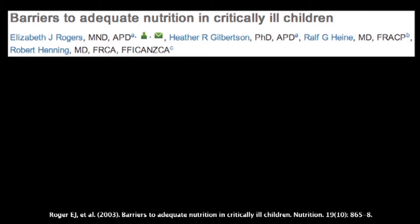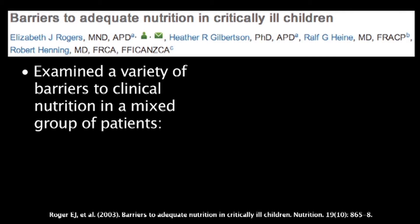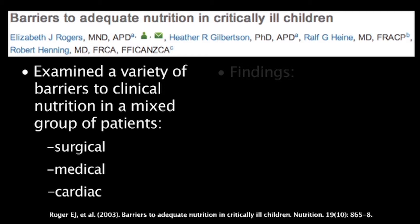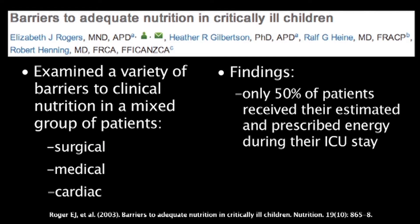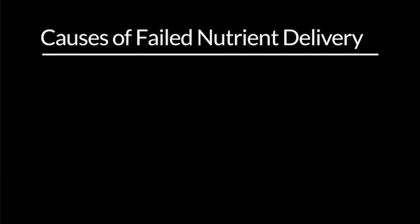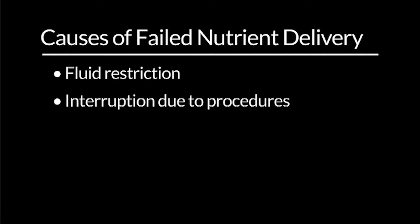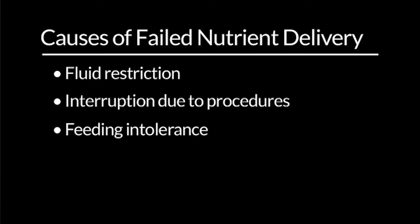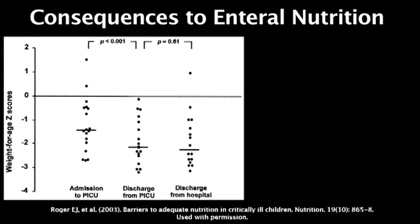Rogers and colleagues from Australia depicted this very elegantly in a study looking at barriers to feeding in a mixed pediatric ICU consisting of surgical, medical, and cardiac patients. They reported that only half the patients in their ICU received the estimated and prescribed energy during their entire ICU stay, and this figure was even lower for patients admitted with cardiac problems. Common reasons cited for failure to deliver nutrients included fluid restriction, interruptions of enteral nutrition for procedures, and perceived intolerance to feeding.